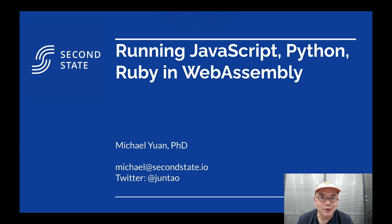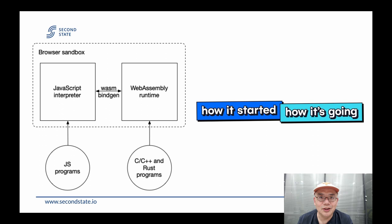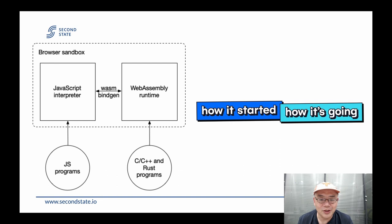Essentially, we're talking about running scripting languages in WebAssembly. Since we are a technical audience, I'll just cut to the chase. WebAssembly was originally designed not to be a scripting language platform — it was created because we were unsatisfied with JavaScript performance. We wanted to run C, C++, and Rust code — compiled language code with close-to-native performance — alongside JavaScript.